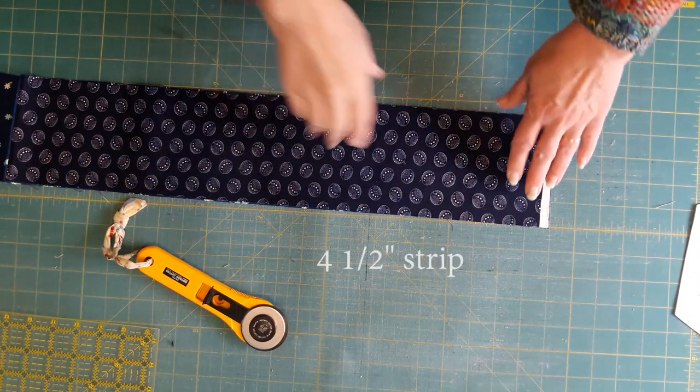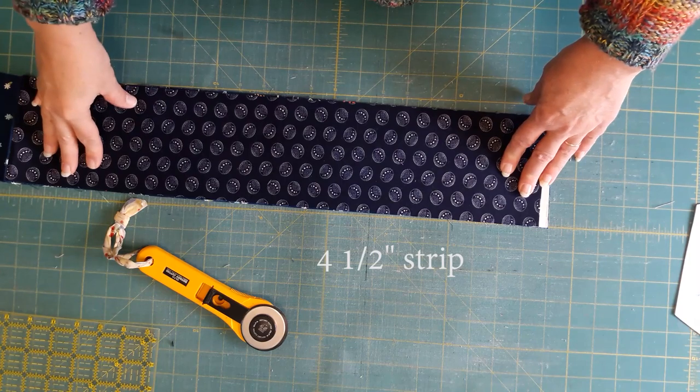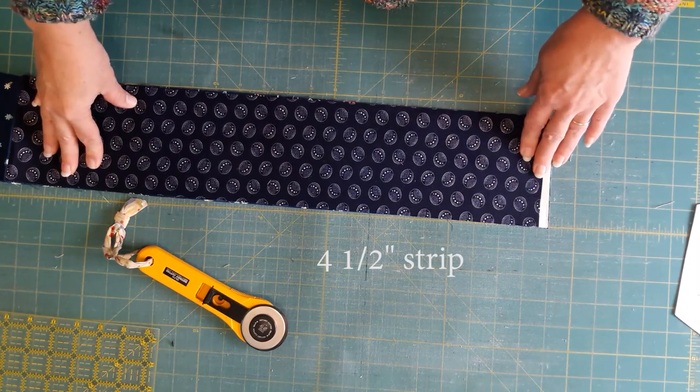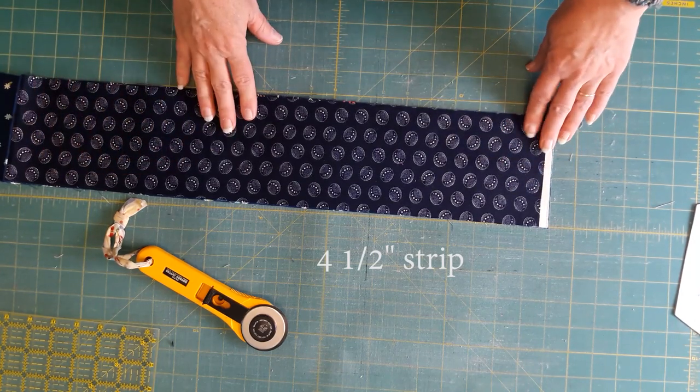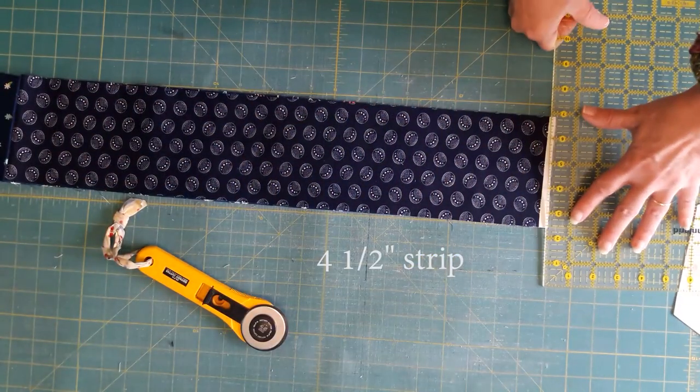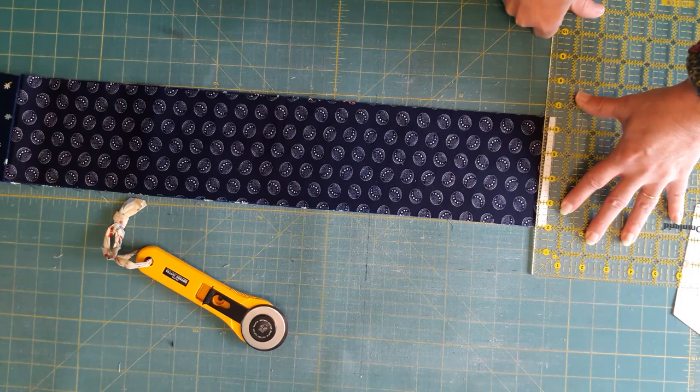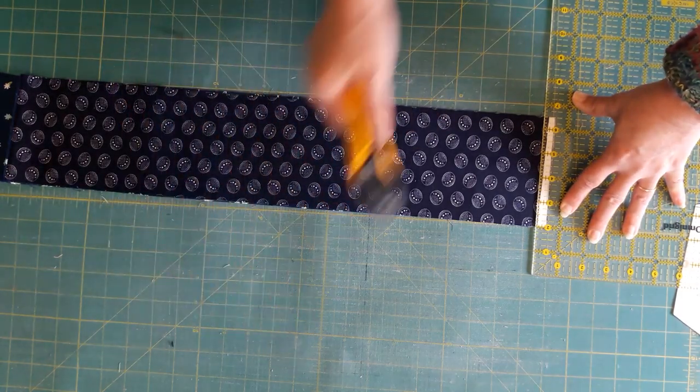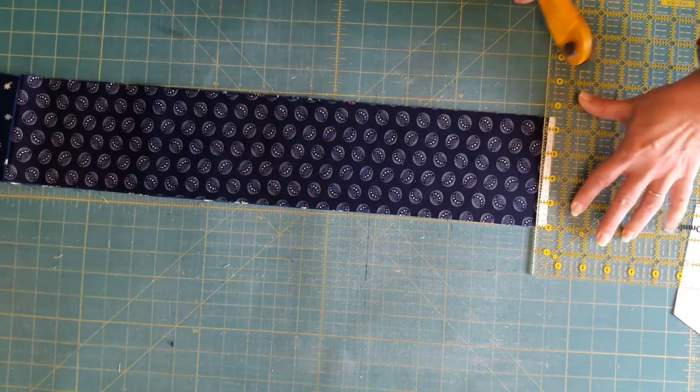Then I'm going to want to cut a 4 1/2 inch strip of whatever I want my kites to be for my spiderweb. I found that gives me the least amount of waste. You still have a little bit of waste, but not as much.